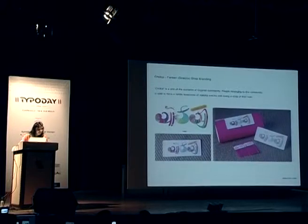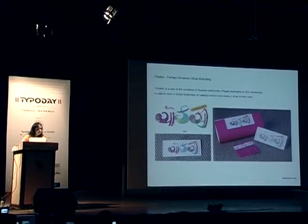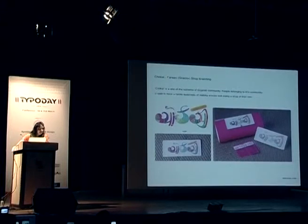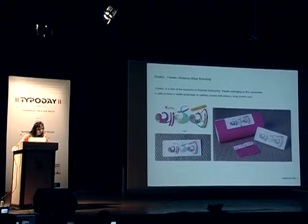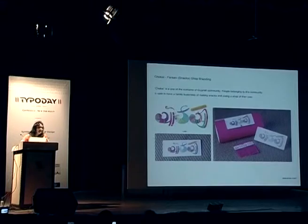This is a branding done for Choksi — a surname particularly common in Gujarat. And this is a branding for a Farasan shop. The brand continued to have Khakara packs. Khakara is nothing but wheat crisps, and it is the only low-calorie snack amongst the Gujarati cuisine.